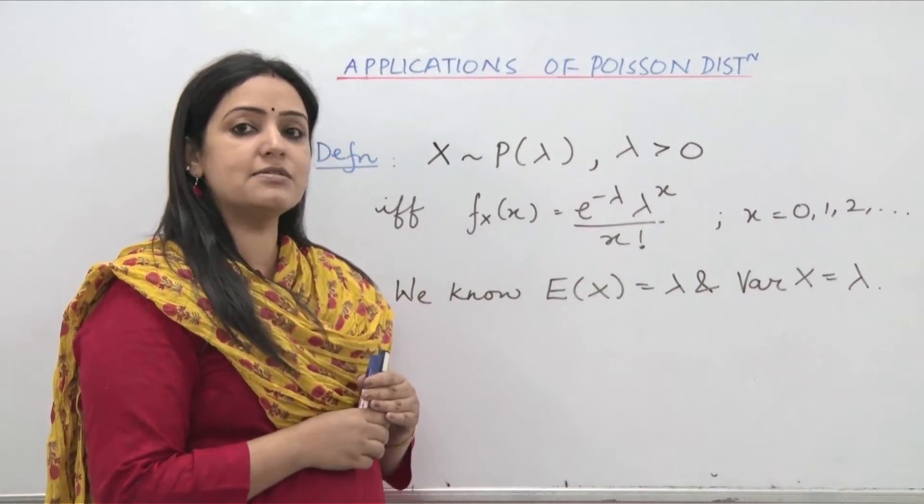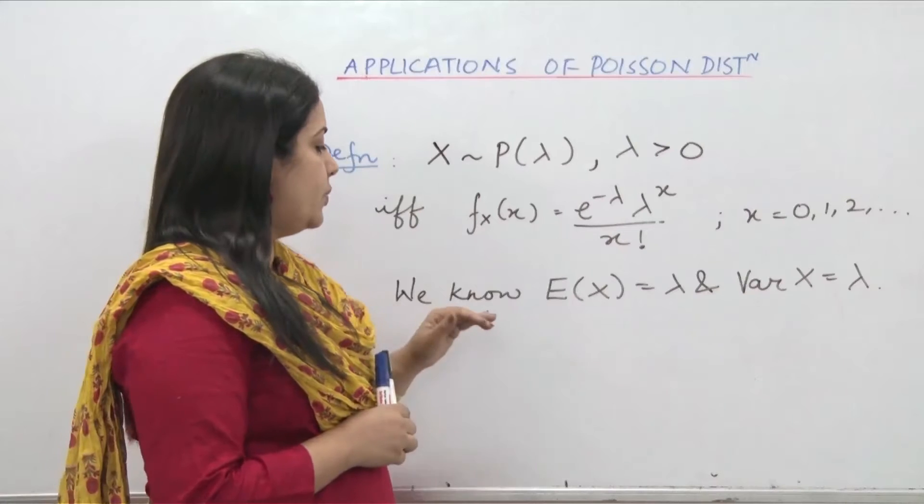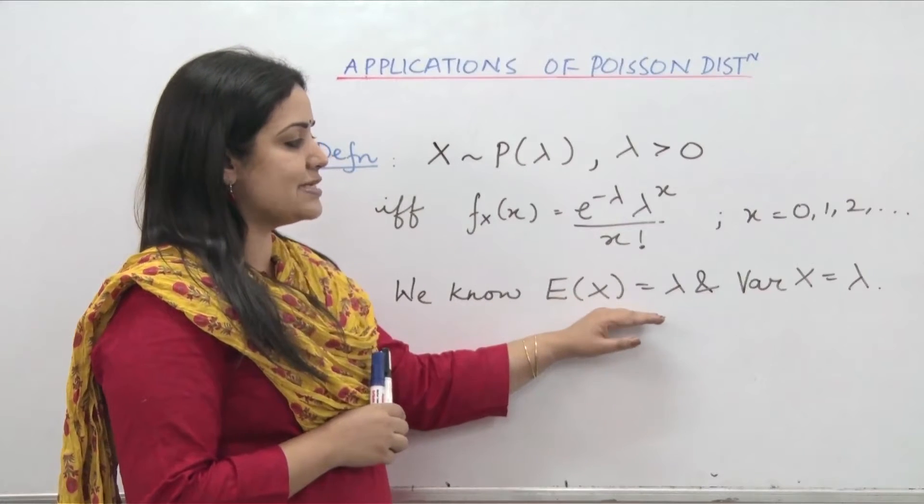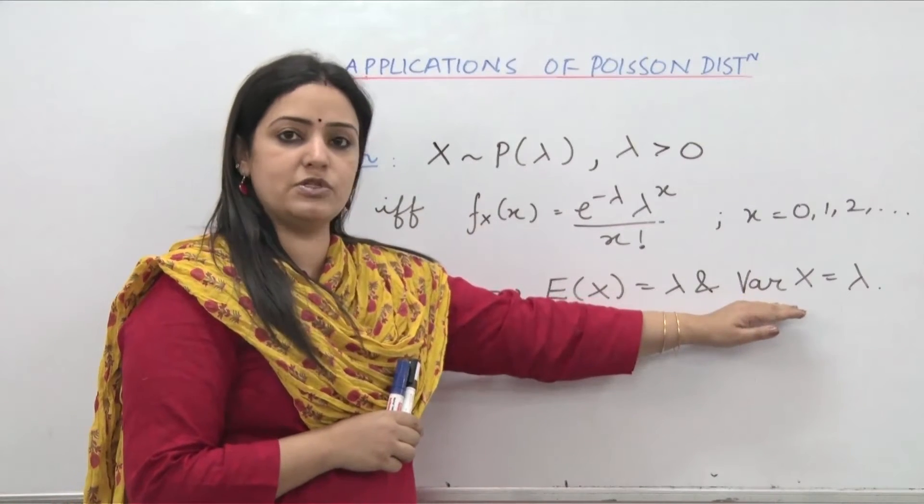So basically it is a discrete random variable. We also know expectation of x is lambda and variance of x is also lambda.